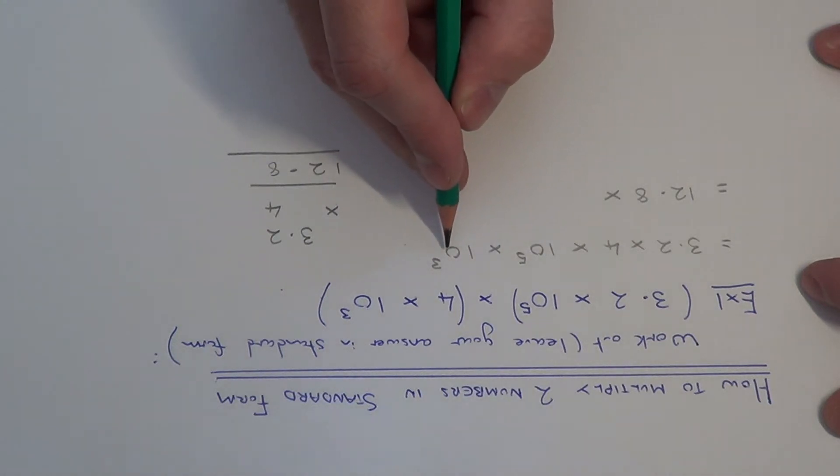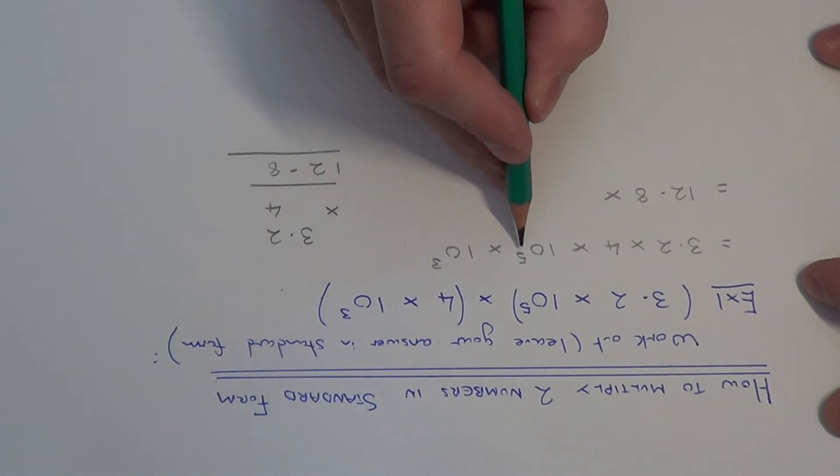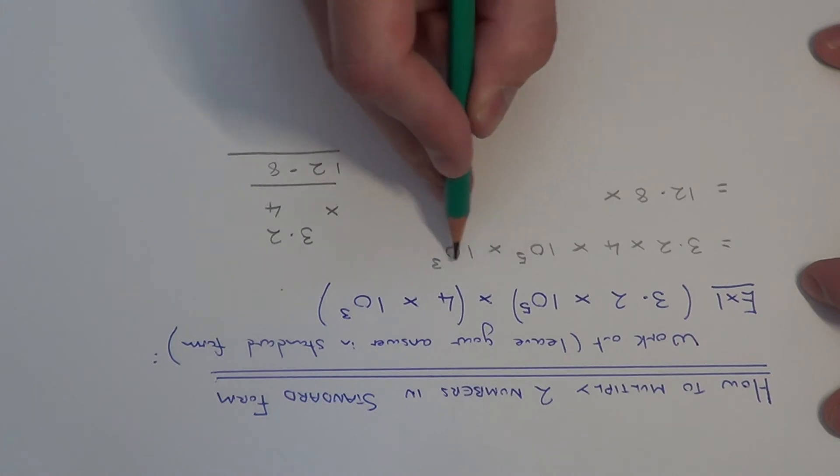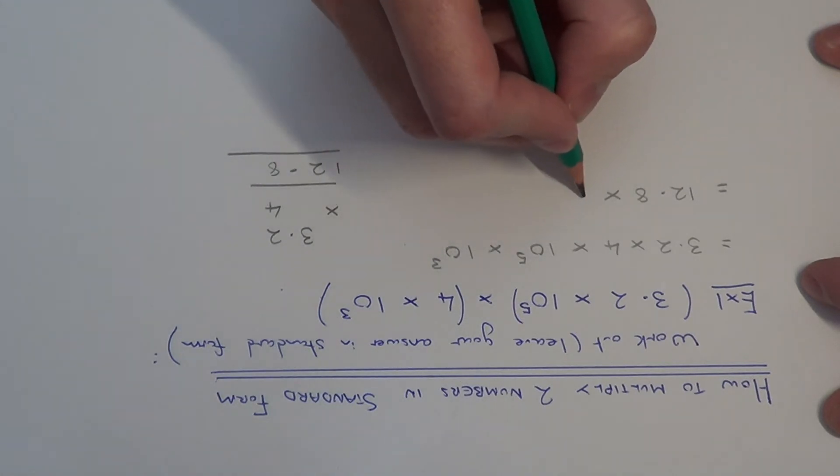So we've got 10 to the power of 5 times 10 to the power of 3. So when we're multiplying powers you add the powers at the top. So this will give us 10 to the power of 8 because 5 plus 3 is 8.